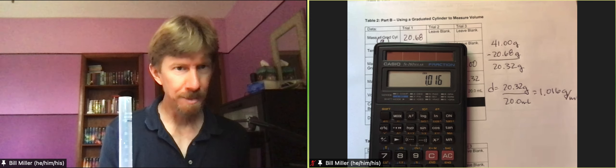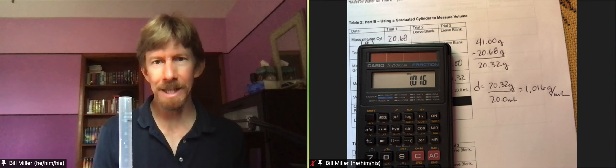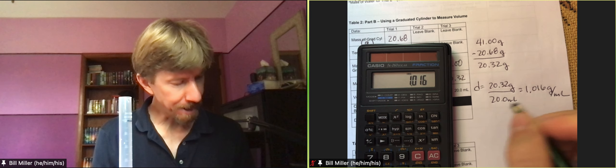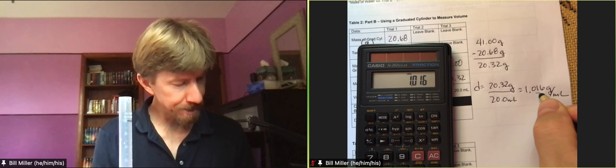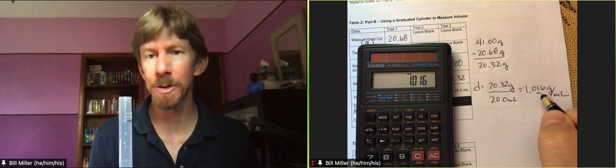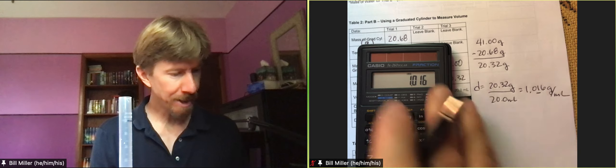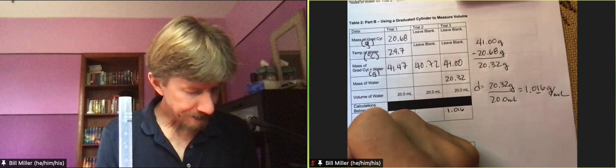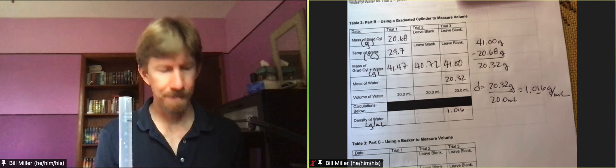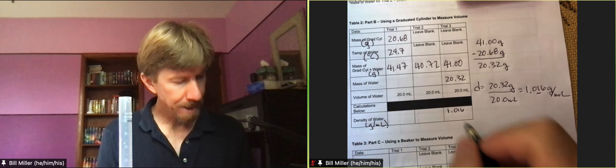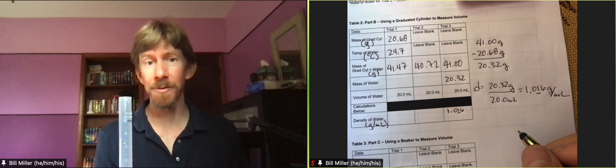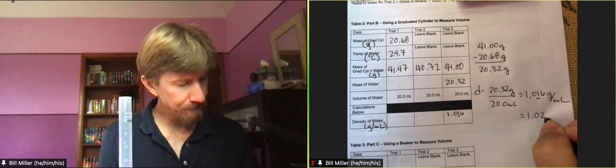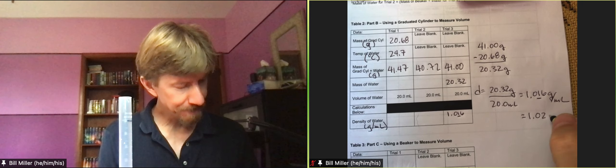All right, so let's do this out: 20.32 divided by 20, 1.016. That's going to be grams per milliliter. Now you have two choices how you report this. One choice is you go ahead and you underline the third digit, or the third significant figure, which would be the one, and write that number in here. And these are going to be grams per milliliter, and I should underline that third significant figure. That's a fine choice.